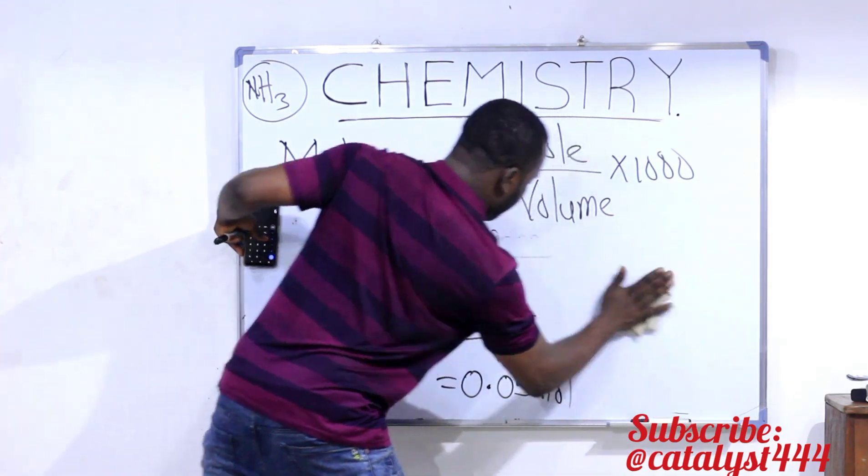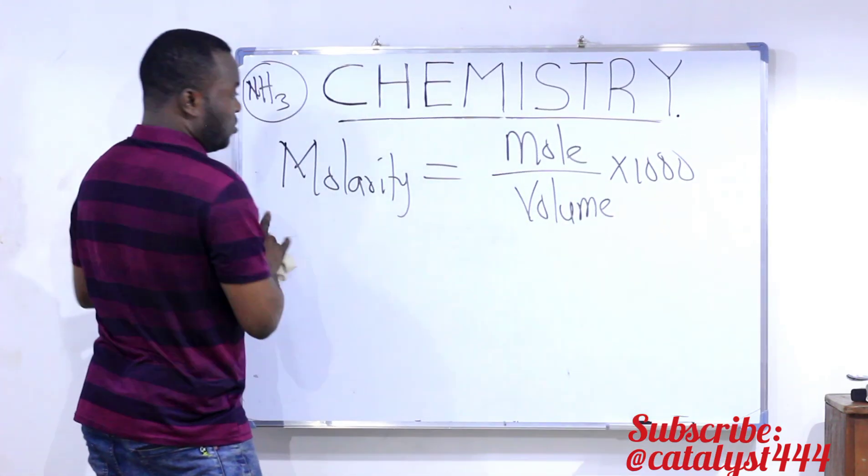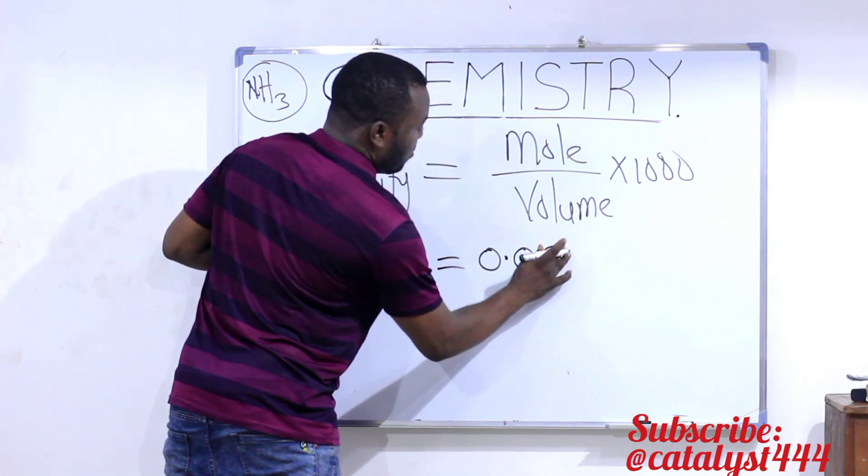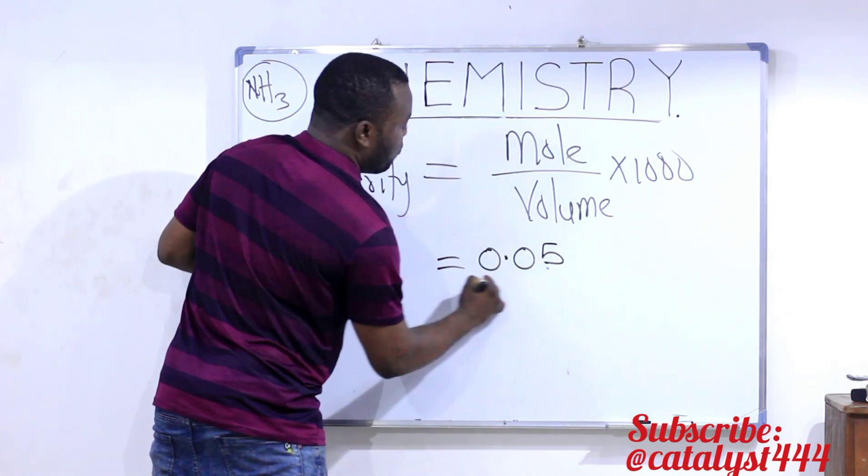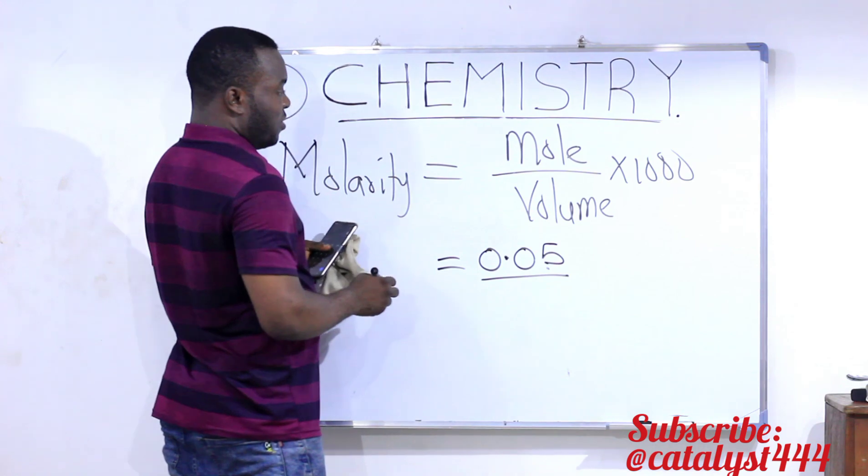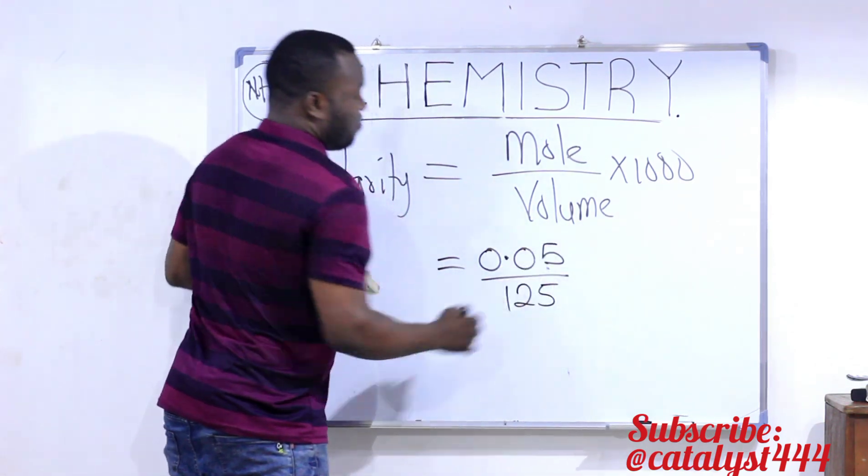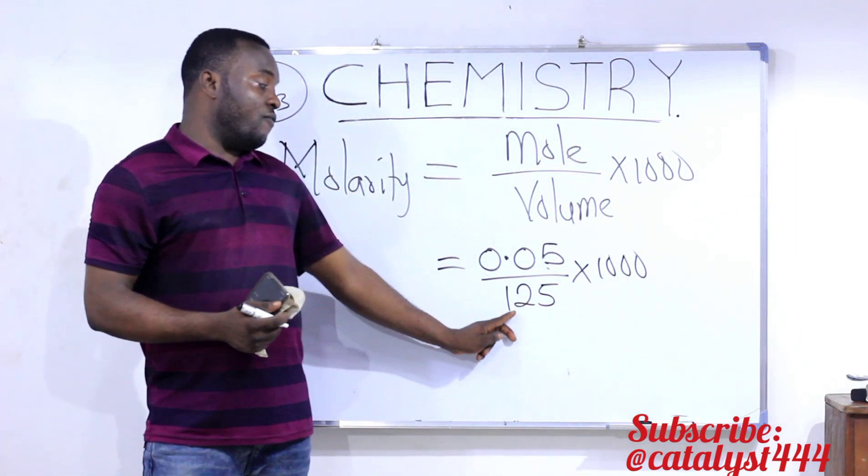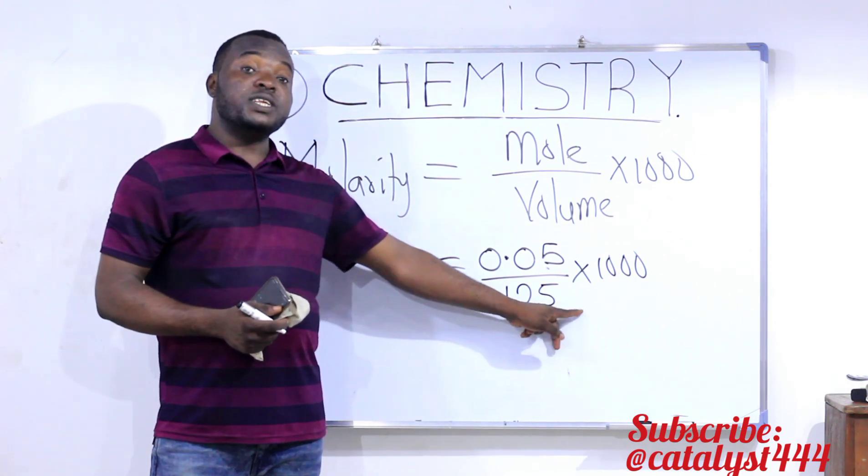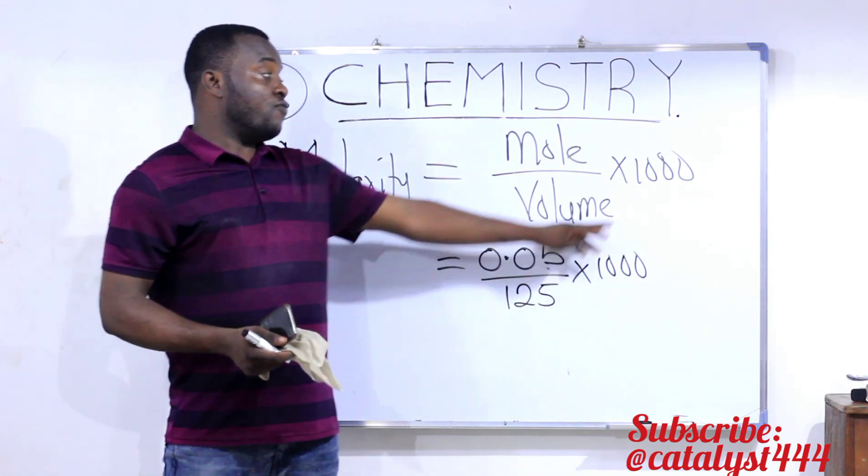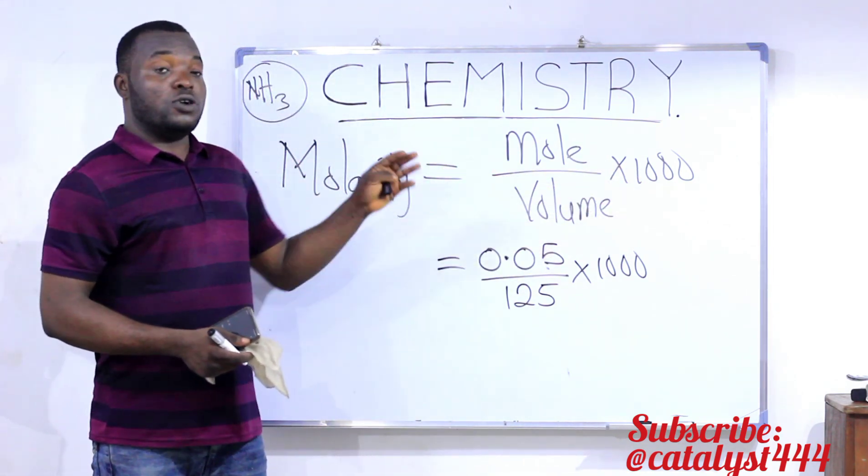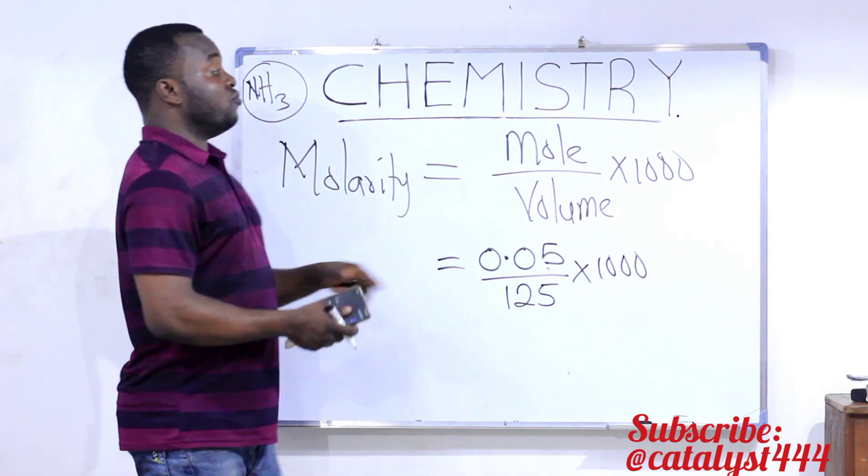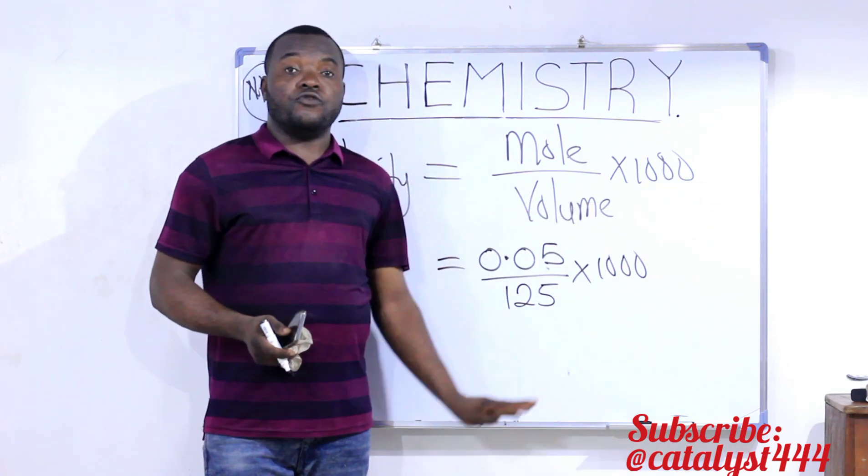Therefore, the molarity which we are looking for becomes the mole, which we have gotten to be 0.05 divided by the volume, which is given to us as 125 multiplied by 1,000. Remember this. I did not convert this 125 milliliter to a liter. Why? Because I am using the formula that has 1,000. Assuming I'm using the other formula, the one that does not have 1,000, I will convert the volume to dm³. The work of this 1,000 here is to convert the volume for you.